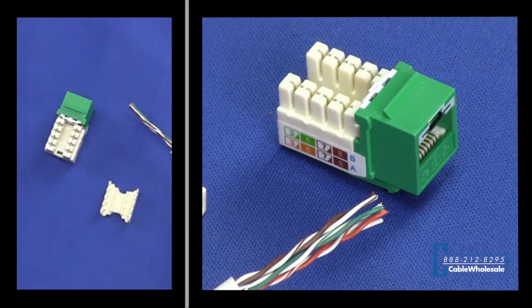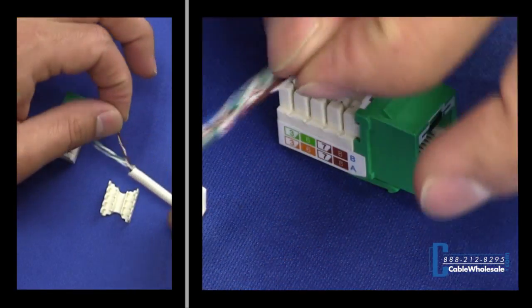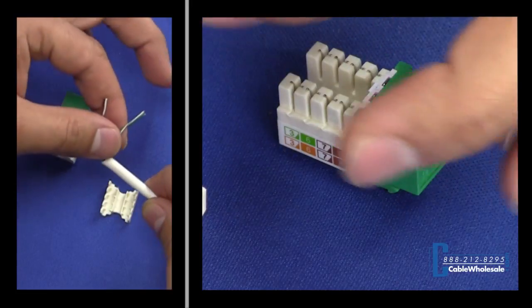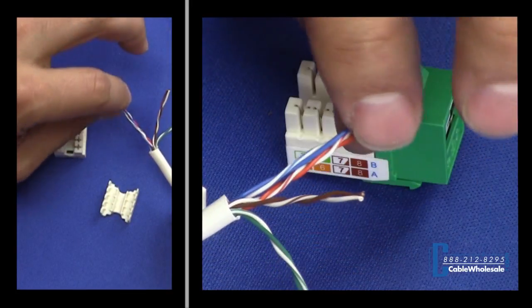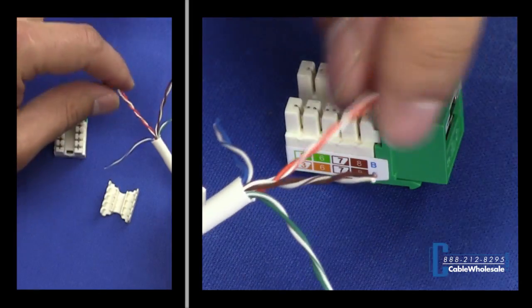Okay, so what I have here is a cat cable. Now this guy is stripped down about an inch to reveal the twisted pairs on the inside. Now what I like to do is fan them out in the basic order on how I will be crimping them down.